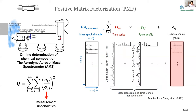Typically, we use the online instrument, the Aerodyne aerosol mass spectrometer, AMS, to determine the chemical composition with the time series of total organic mass spectrum. Then we use positive matrix factorization, PMF, to quantitatively separate the original time series of organic aerosol matrix into several time series of OA factors.